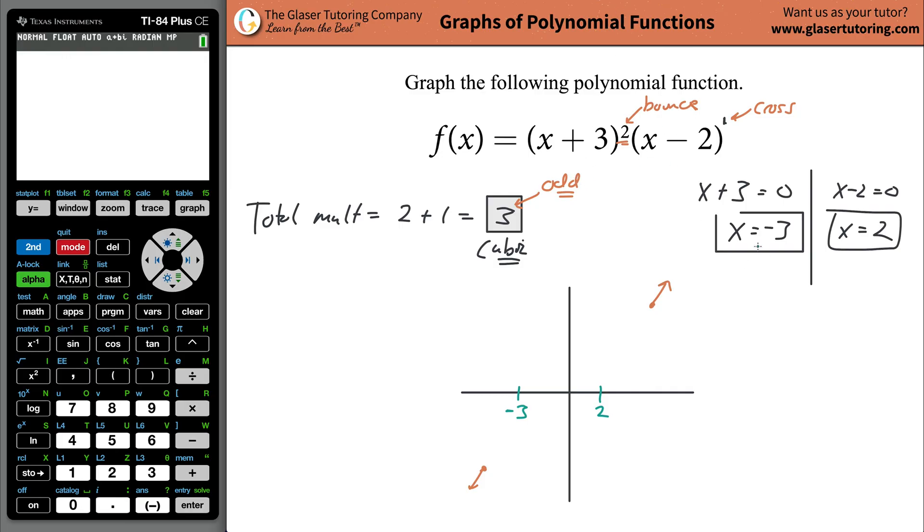So remember, this value, this x intercept of negative three, was gotten from this factor, and this factor had a power or multiplicity of two, it's going to bounce, it's going to bounce. So what we're going to expect to happen is that this graph will come up, it will touch this point, and then bounce back down. Now, since this is a, since our x intercept of positive two was odd, it just crosses. So eventually, what's going to happen here is that this is probably going to come up here, cross this, and then go straight on up.